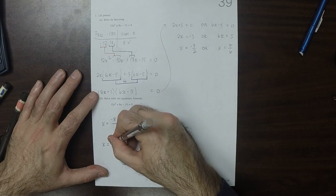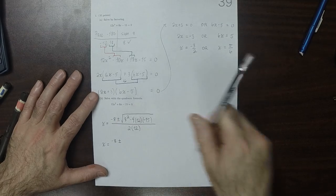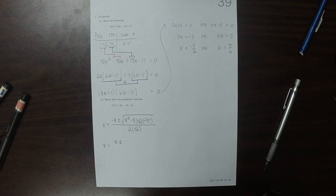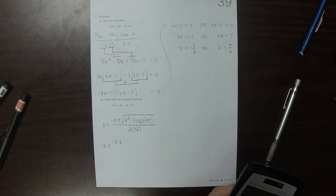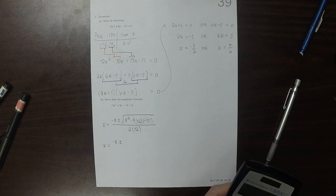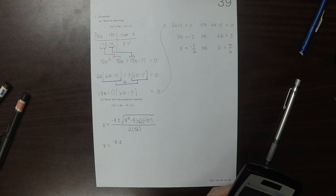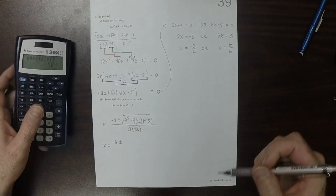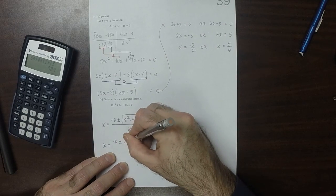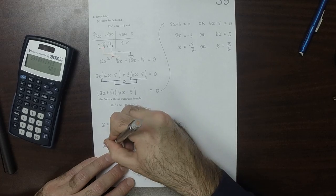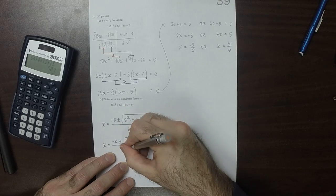So that would be negative 8 plus or minus. And then in the square root, that would be 784. So square root of 784, and then divide by 24.